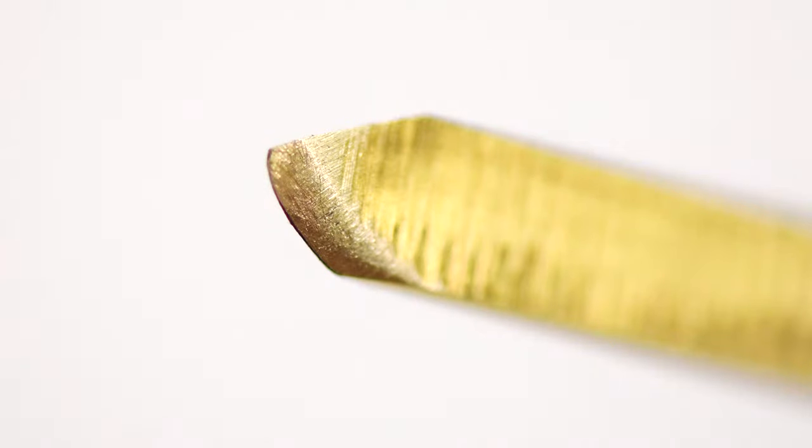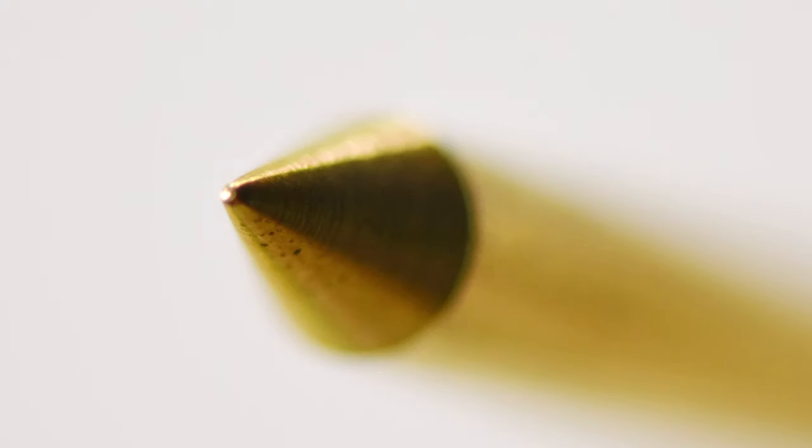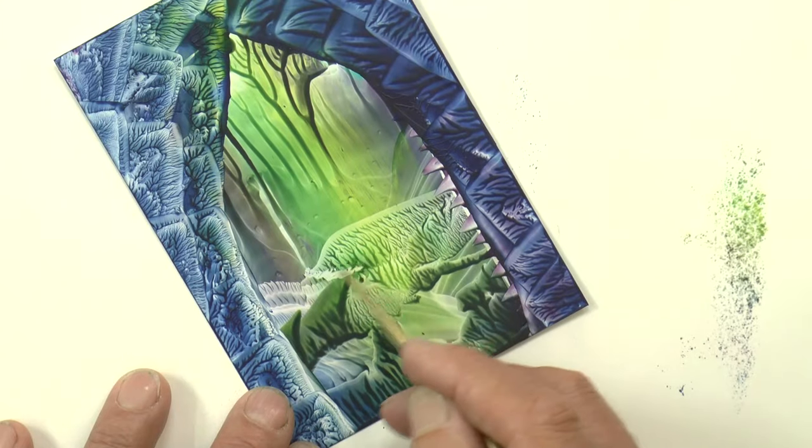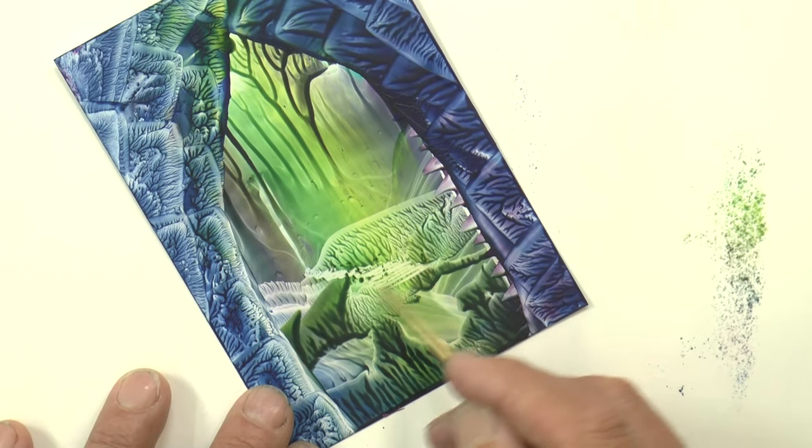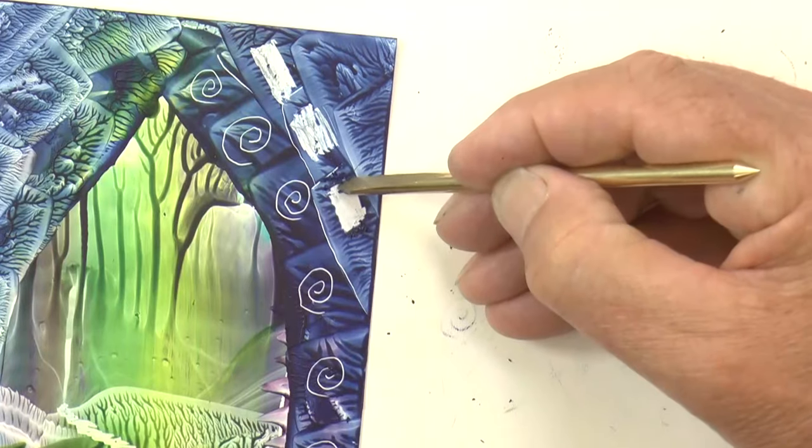The pointed edge is perfect as it is, great for signatures. Use the bladed end for a pathway, for instance, scraping away quite vigorously. Look at all the shards of wax, or taking wax off.